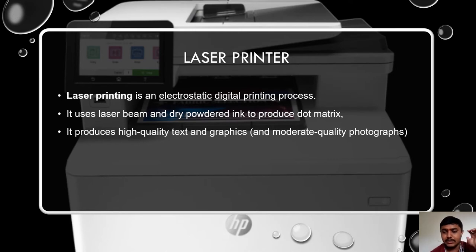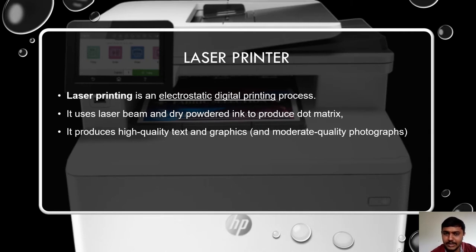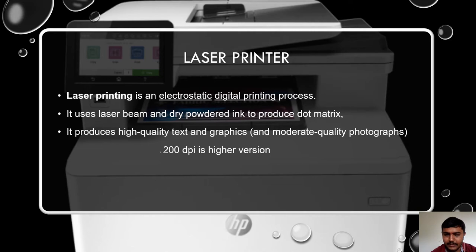Using a laser printer, we can design banners and print photographs in A4 or A3 size. The lowest resolution of images from a laser printer is 300 DPI (dots per inch) and the highest is 12,000 DPI. That is about the laser printer.